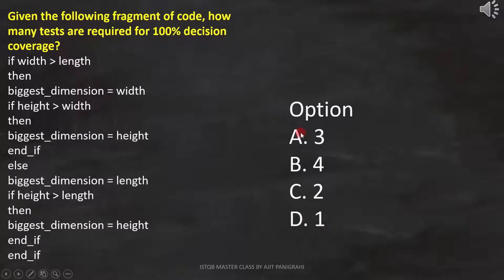Let's first analyze the code and parallelly draw the flowchart to get the answer. First line is: if width is greater than length. Now let's draw the flowchart for it, since it is a condition we have represented like this.